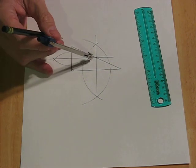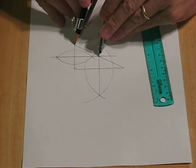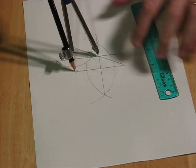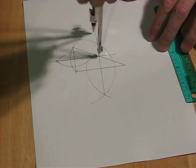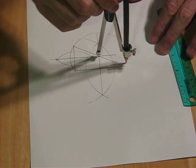So if we stick the center of the compass here, we should be able to make a circle that goes through all three of those. Let's just bring this on around. Let's see, there we go, nice, nice.